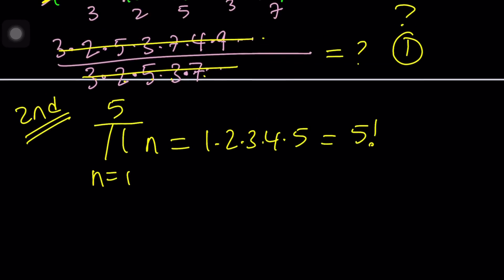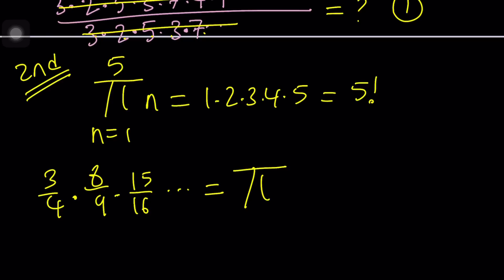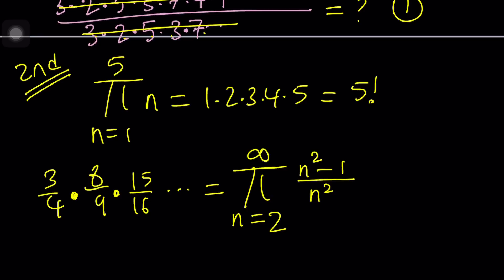So how do we express this product — 3 over 4, 8 over 9, 15 over 16, and so forth — using pi notation? We can write it as pi from n equals 2 to infinity. I want to start at 2 so I can have n squared at the bottom, and the top will be n squared minus 1. This is nice because it gives you an idea about how we can solve this problem. Let me show you.